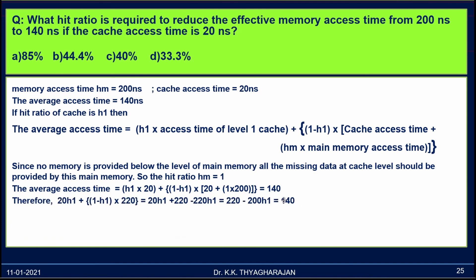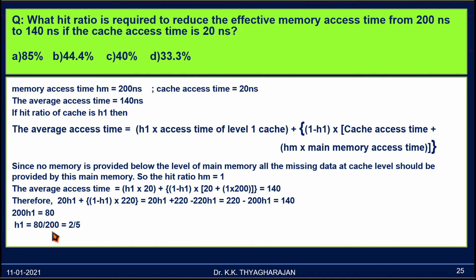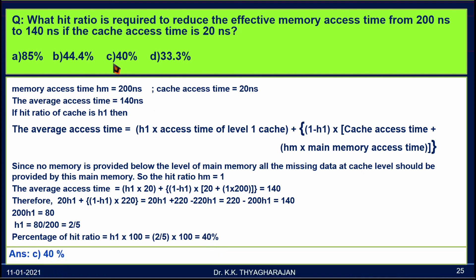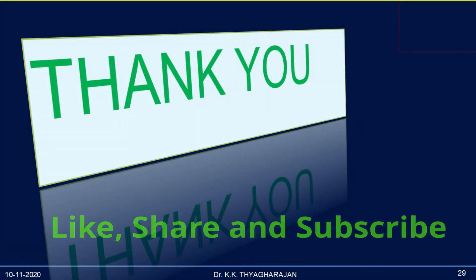Solving the equation: 20·H1 + (1 − H1)·(20 + 200) = 140, which gives 20·H1 + 220 − 220·H1 = 140, so 220 − 200·H1 = 140. Therefore 200·H1 = 80, so H1 = 80/200 = 2/5. Multiplying by 100 gives 40%. The correct answer is C) 40%.